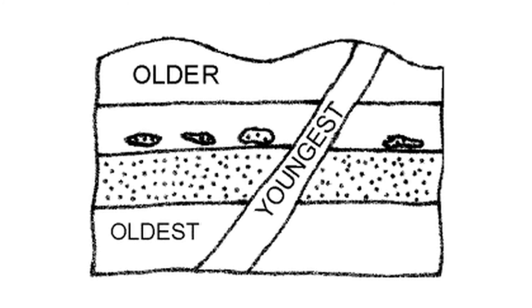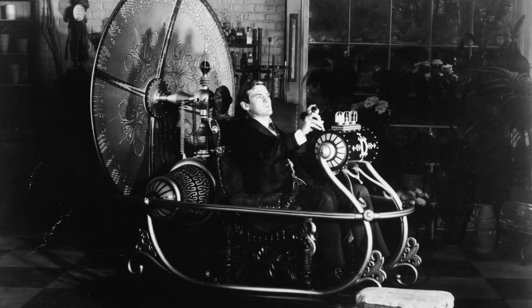These principles help you to identify the sequence of events that must have happened in the past. Which stratum formed first? Second? Third? Is the igneous rock older or younger than the sedimentary rock? When did the fault form? How old are the fossils? These are the questions that motivate work in historical geology. With an understanding and appreciation for these principles, you now have the necessary knowledge to take your own trips backward in time and look closely at Earth history.